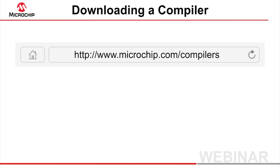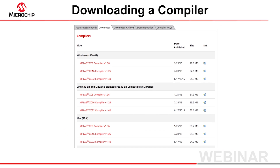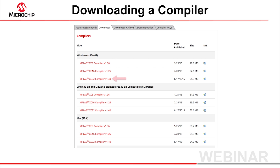All Microchip compilers can be downloaded from the compilers web page. Scroll down and select the Downloads tab. Choose the download corresponding to the platform on which you'll be running the compiler — Windows, Linux or Mac OS X — and corresponding to the device family you will be targeting: the 8, 16 or 32-bit devices.